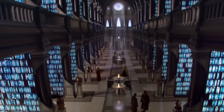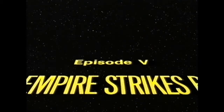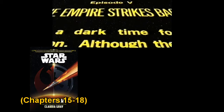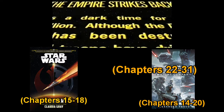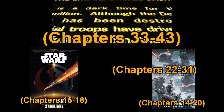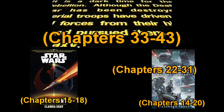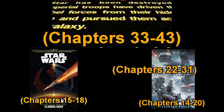And now hopefully you're a fast reader, because it's time to turn the TV back on and watch The Empire Strikes Back. However, while you're watching the film, you must read Chapters 15 to 18 of Lost Stars, and Chapters 14 to 20, 22 to 31, and 33 to 43 of Battlefront: Twilight Company. That means once The Empire Strikes Back is finished, you've also now finished off Battlefront: Twilight Company.